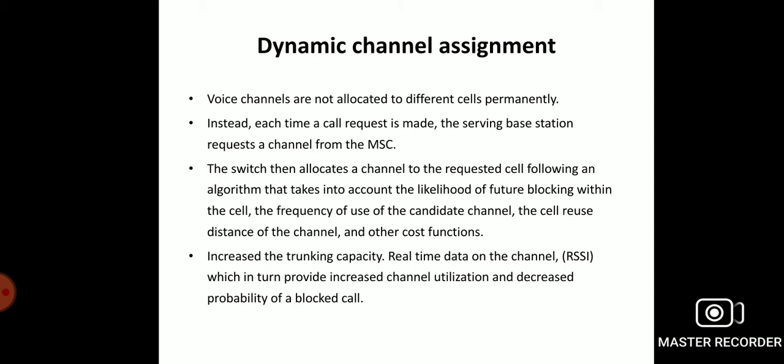Whenever a call request is made at the base station within the cell, it requests the mobile switching center to allocate the channel for each individual cell. Hence the channel allocation will take place as per the need of the cells. Both fixed and dynamic channel assignment are supervised by the mobile switching center. The mobile switching center monitors and makes sure that the channel assignment scheme does not disturb any calls that are in progress.